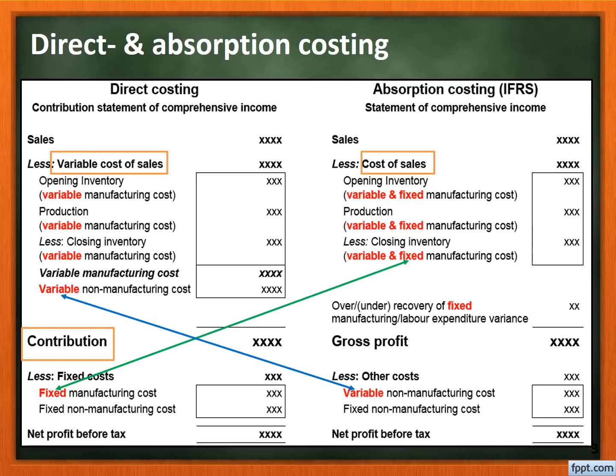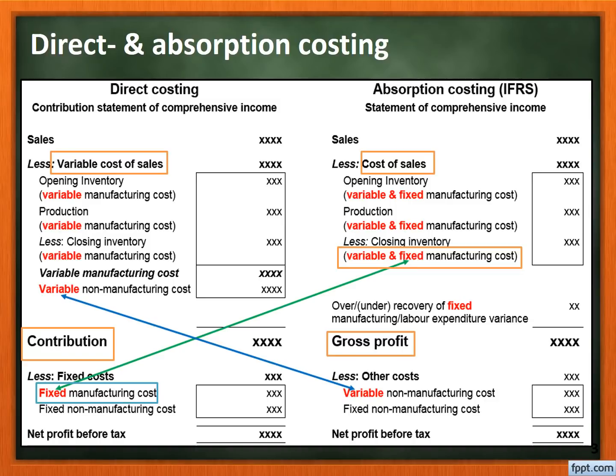Also, a contribution is calculated under the direct method as opposed to gross profit under the absorption costing method. I'd also like to bring your attention to the green line. The green line demonstrates the different treatment of the fixed manufacturing cost. Under the direct method, the fixed manufacturing cost is treated as a period cost, while the absorption method allocates fixed manufacturing costs to products, making it a product cost.